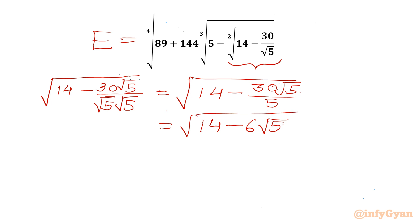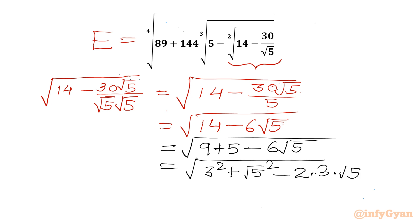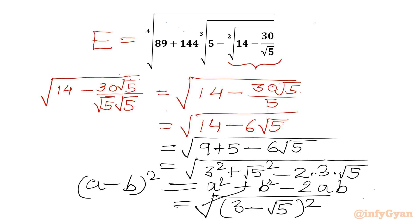Now we can write 14 as 9 plus 5, so the expression becomes the square root of 9 plus 5 minus 6 root 5. We write 9 as 3 squared, 5 as (root 5) squared, and 6 root 5 as 2 times 3 times root 5. This is the identity a² + b² − 2ab = (a − b)², so we get the square root of (3 minus root 5) squared, which simplifies to 3 minus root 5.